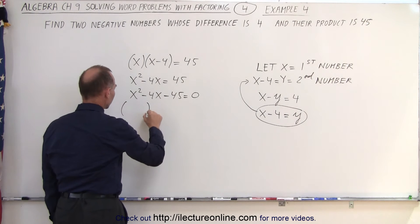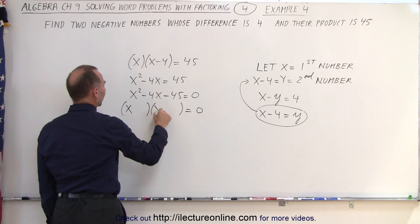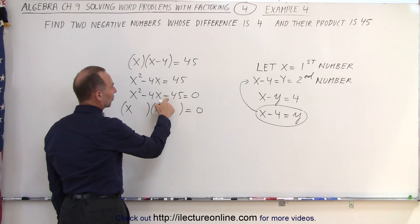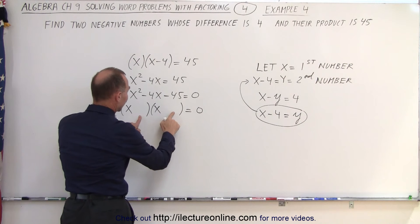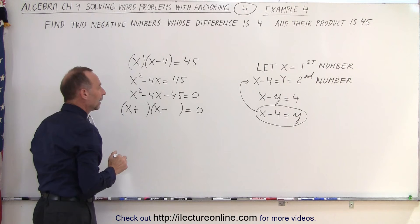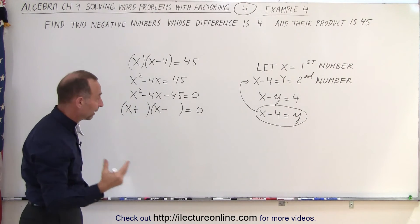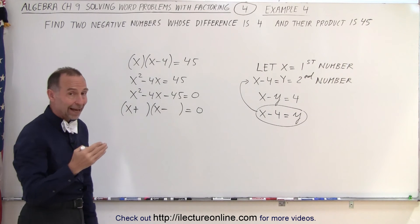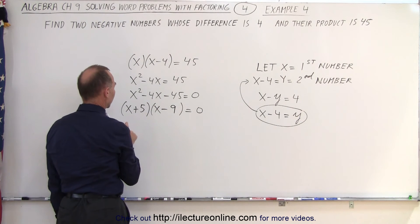That factors into two binomials. For the first term, I know I need an x and an x, so that x times x gives me x squared. For the signs, it tells me that one number must be positive, and the other one must be negative. Otherwise, when I multiply them together, I cannot get a negative 45. So I need a plus and a minus. When I add the two numbers together, I get a negative 4. That means the negative number is 4 bigger than the positive number. And it looks like 9 times 5 is 45, and 9 is 4 bigger than 5. So minus 9 and a plus 5 seems to do the trick.